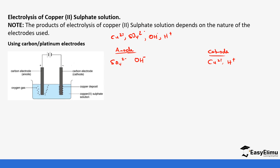At the anode — the positive electrode, where there is loss of electrons — if we look at the preferential discharge for sulfate and hydroxide ions, you notice hydroxide ions will have the highest tendency to lose electrons. They are less positive in comparison to the sulfate ions. You can check the electrochemical series from the previous lesson or your textbook. So we prefer hydroxide ions over sulfate ions. When we discharge hydroxide ions: 4OH⁻ → 2H₂O + O₂ + 4e⁻.